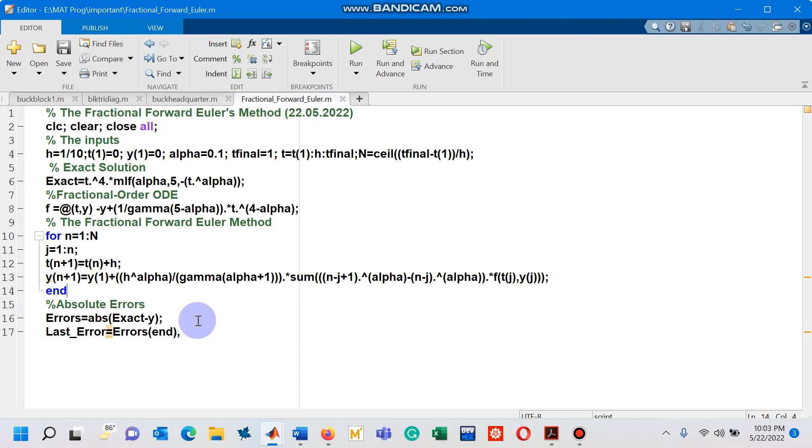Now I am interested in finding the absolute errors. This is how the absolute errors are found on line number 16, and then I am interested in finding what is the last error among all of these errors.